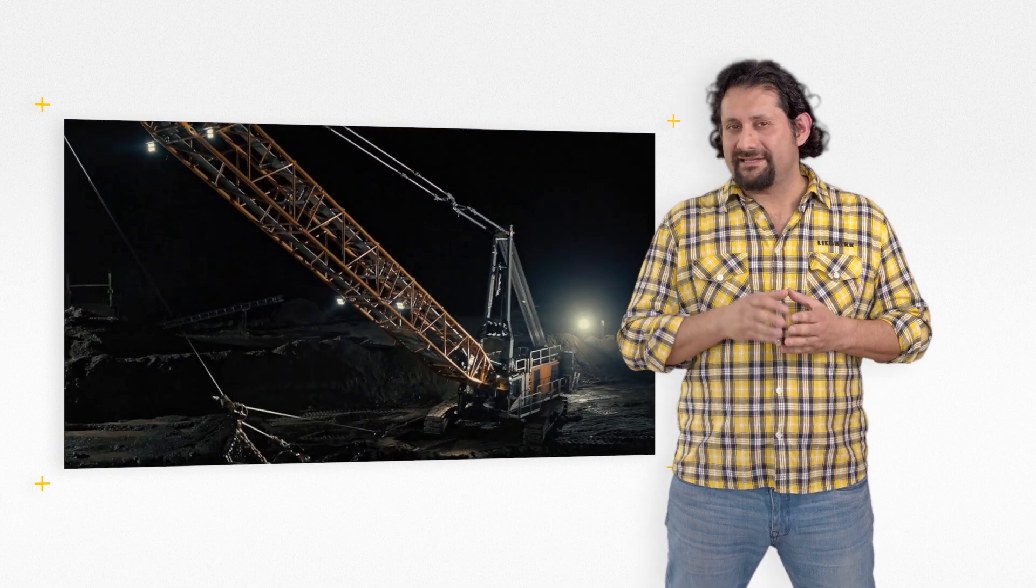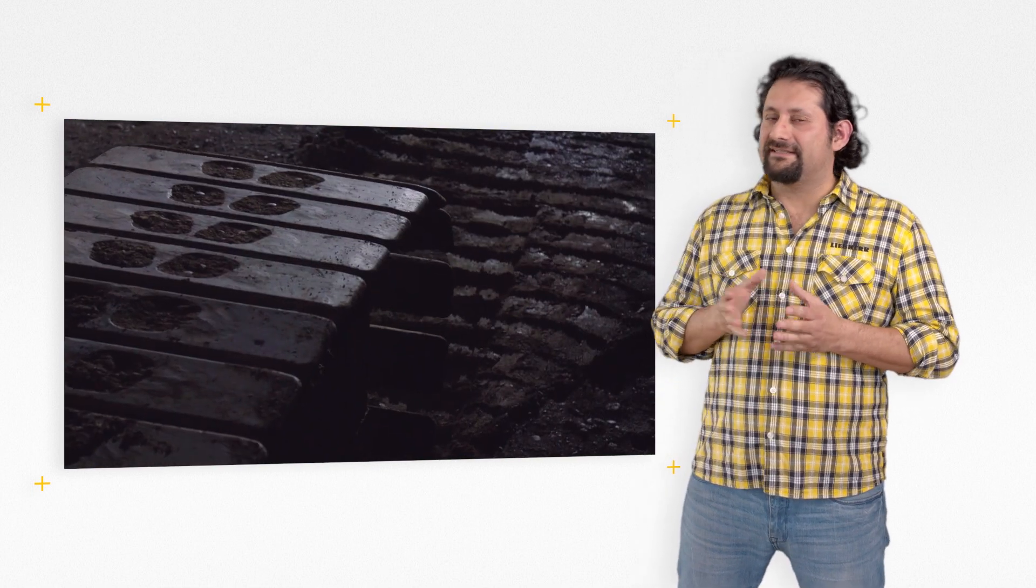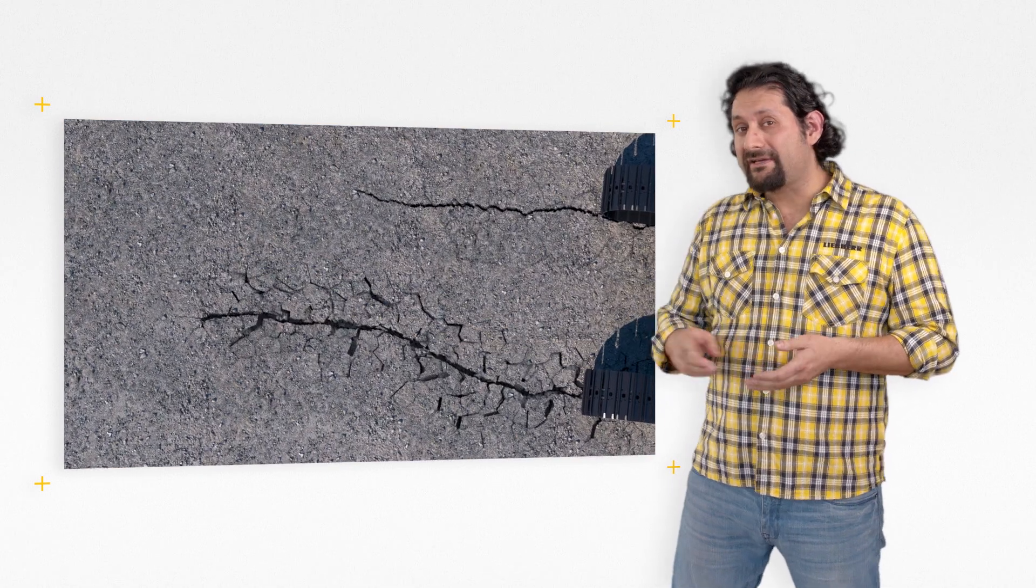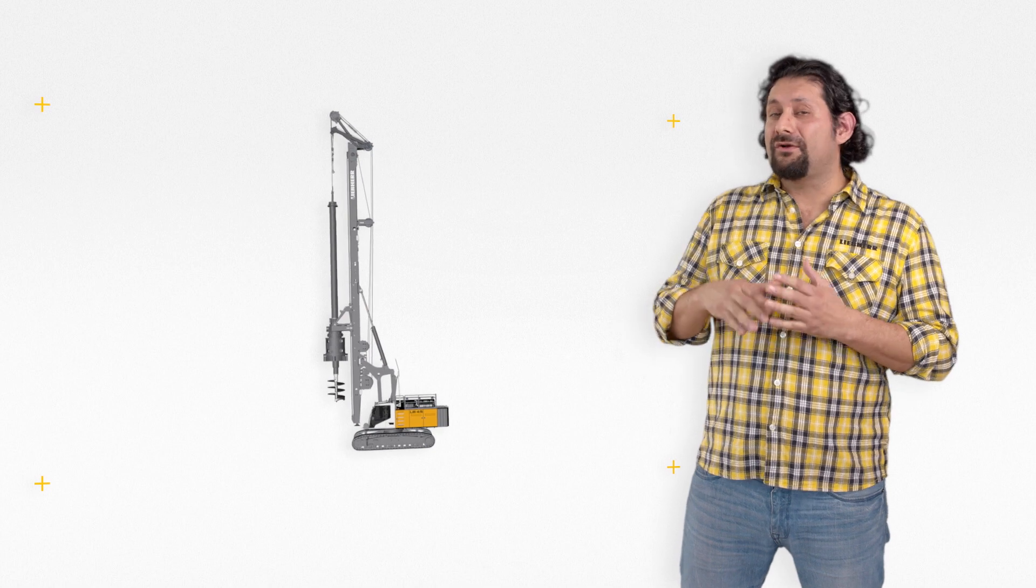But did you know that external factors represent a residual risk? Such as ground subsidence. If the ground pressure of the machine is too high, the ground can subside and the machine could overturn.